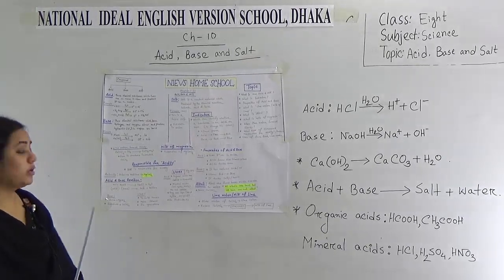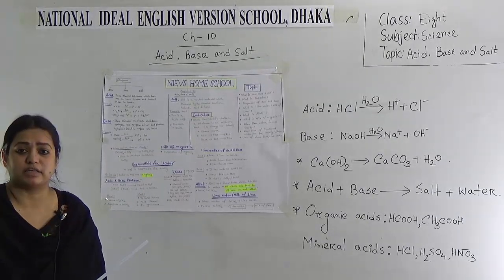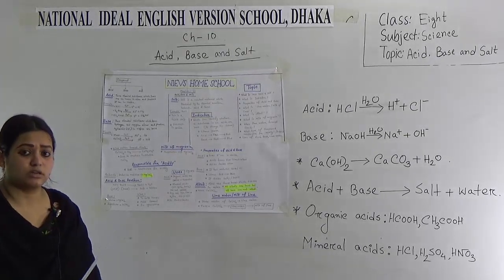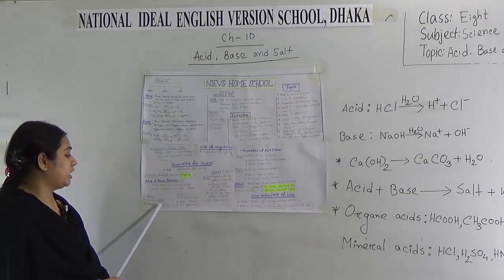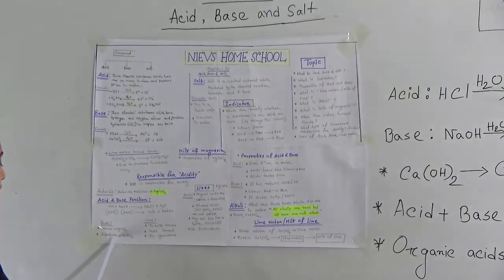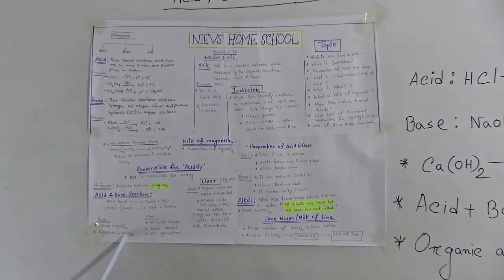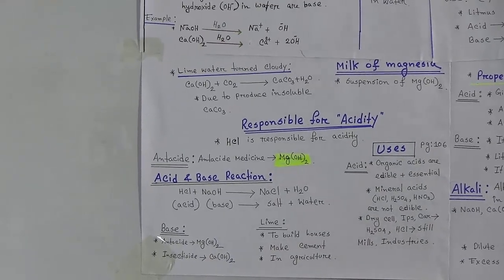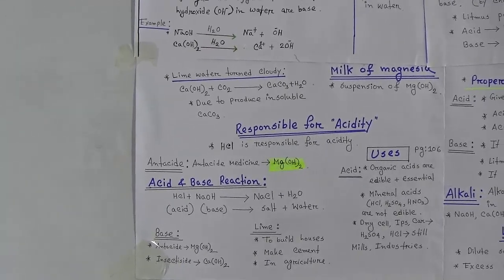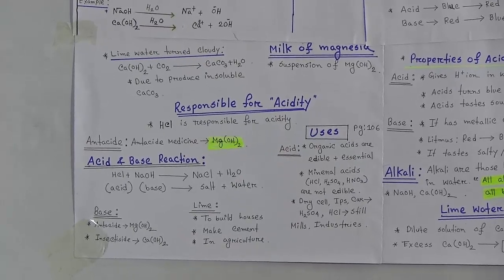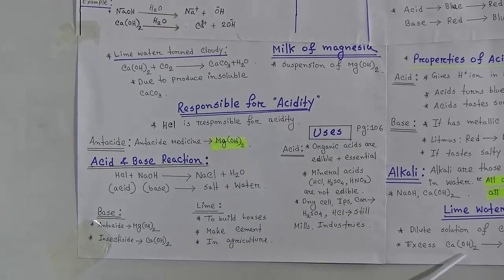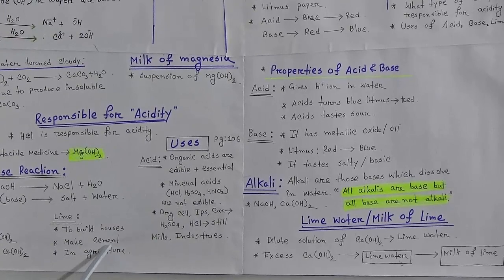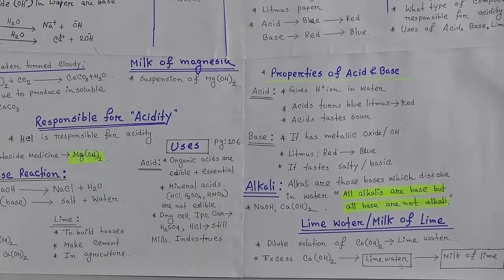Now the uses of base. You have already known an important use of base — that is antacid in the medical industry. Base is also important for making medicines and insecticides. We also use calcium hydroxide in insecticides. The uses of lime water: to build houses, to build buildings, and any structure — we use lime, that means calcium hydroxide. Calcium hydroxide is also used to make cement, and in the agriculture industry calcium hydroxide is also used.